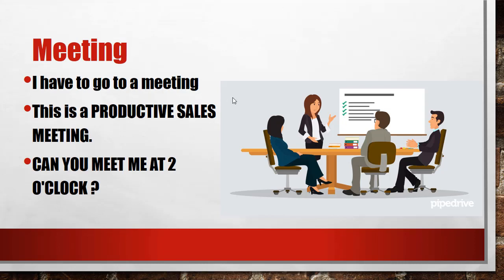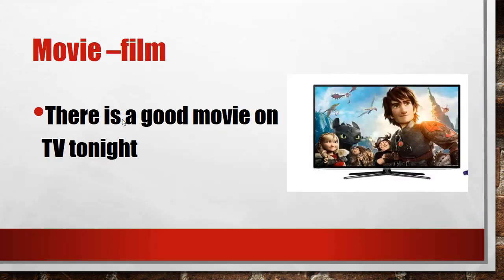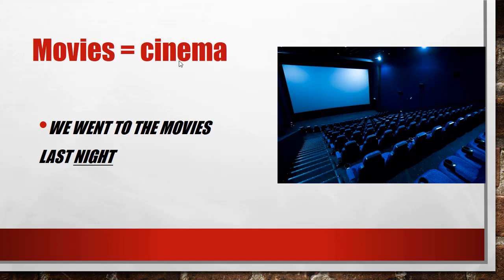Meeting — 'I have to go to a meeting.' This is called a meeting. 'This is a productive sales meeting. Can you meet me at two o'clock?' Movie — the American form — versus film, which is British. 'There is a good movie on TV tonight.'